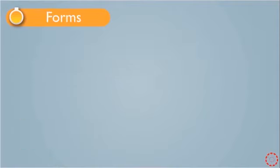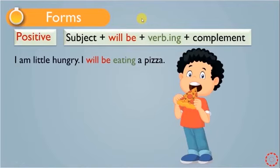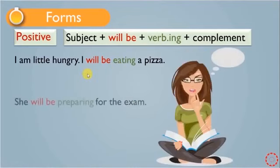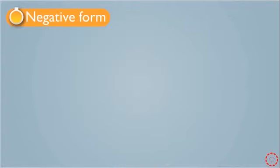Now let me show you the forms of Future Continuous. This is the positive form: we have the subject at the beginning, then 'will be', followed by the verb+ing, and then the rest of the sentence, or the complement. For example: 'I will be eating a pizza' — we have 'will be' and then verb+ing, which is 'eating'. Another example: 'She will be preparing for the exam' — 'will be' and then verb+ing. This is Future Continuous.